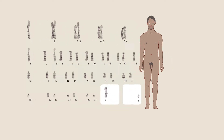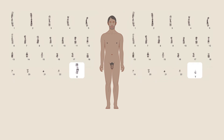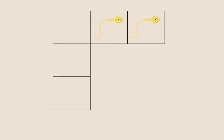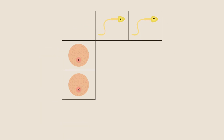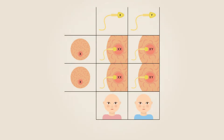Half of the sperm will thus contain an X and half a Y. Females, in contrast, have only X chromosomes, and therefore all eggs will have an X chromosome. As you see in this table, the probability for the birth of a male or a female is always 50%. Hence, the ratio of females to males in the population is roughly 1 to 1.